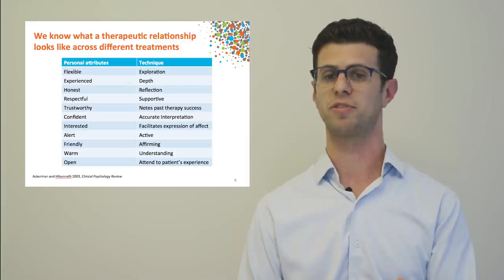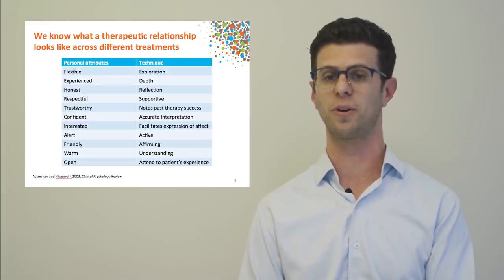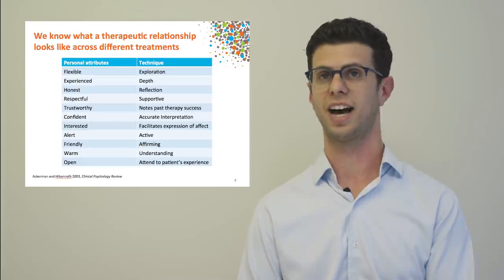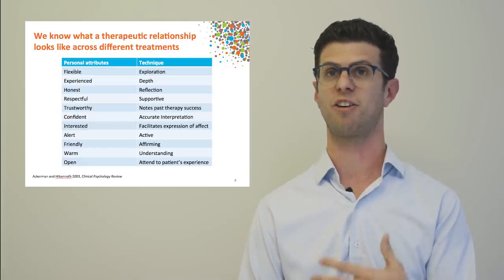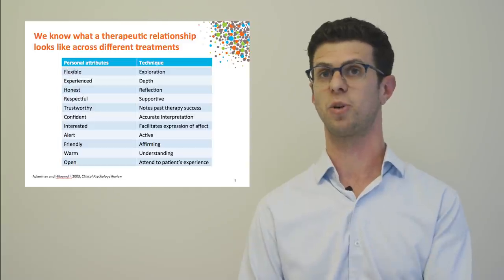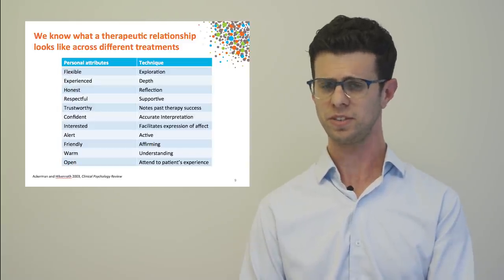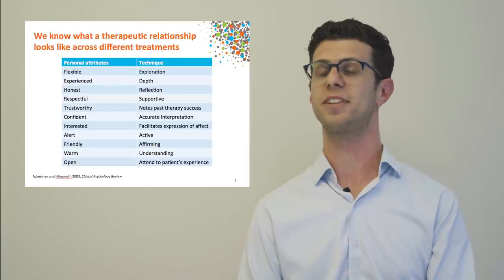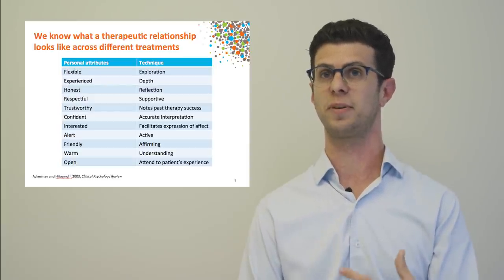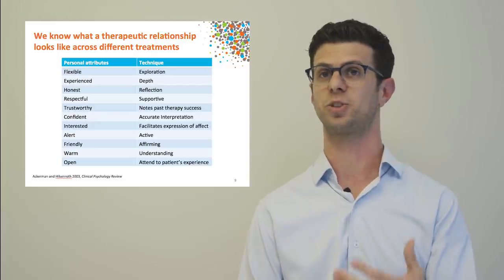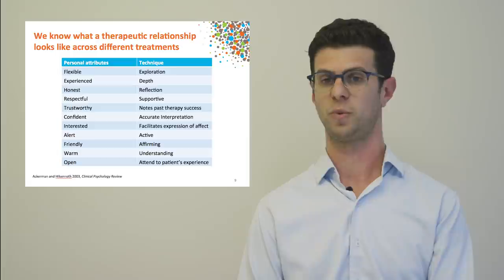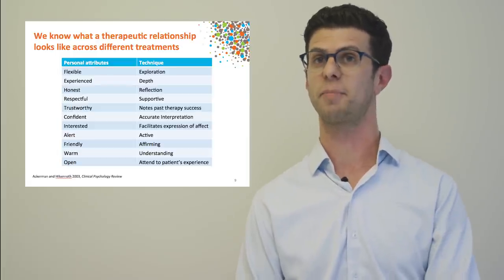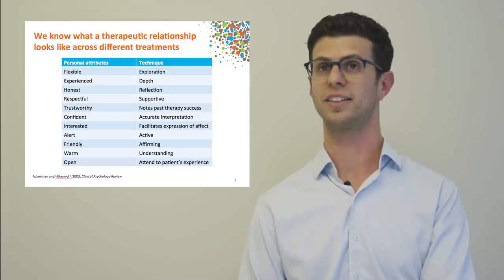We know what a good therapeutic relationship looks like. A review identifies personal attributes of therapists — being flexible, honest, trustworthy, and warm — along with techniques that underlie this. When those things are present, the therapeutic relationship is going well and young people are more likely to have a good recovery. In summary: therapy works, multiple therapies work, the therapy relationship is a fundamental driver, and both therapists and young people value engagement.